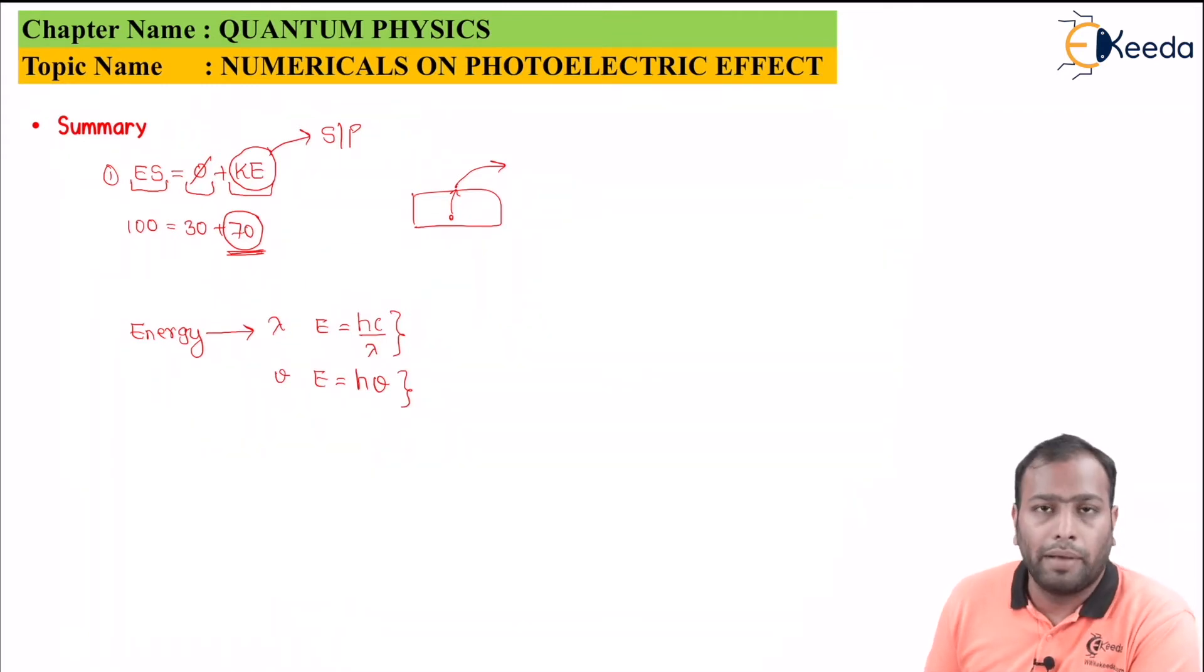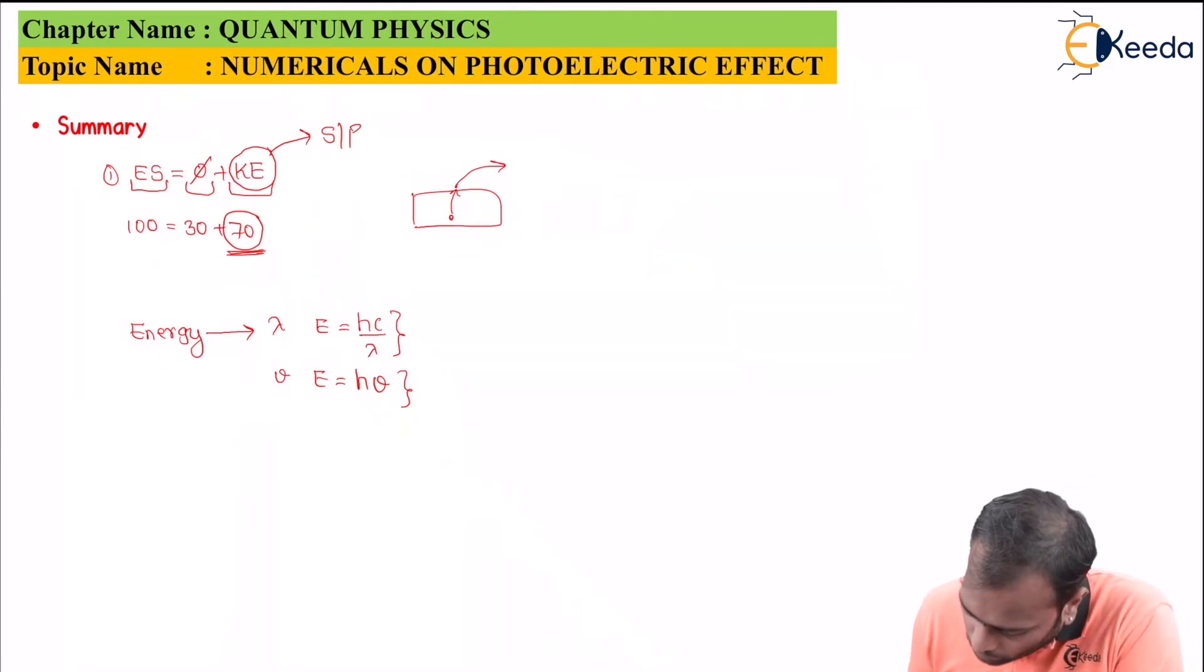Also in mechanics you have joules as the SI unit of energy. Of course in quantum physics we have joules as the SI unit. But since joules is quite a bigger quantity for modern physics or quantum physics we will be using electron volt. Now what is an electron volt? Remember one electron volt is equal to 1.6 into 10 to the power minus 19 joules.